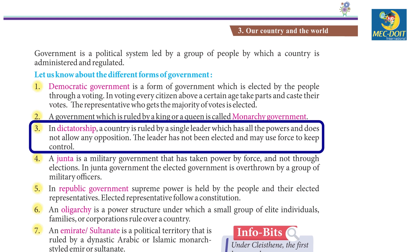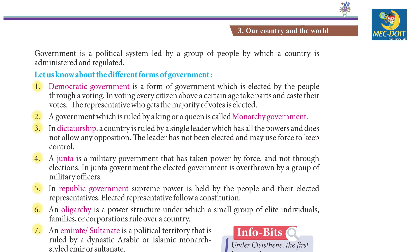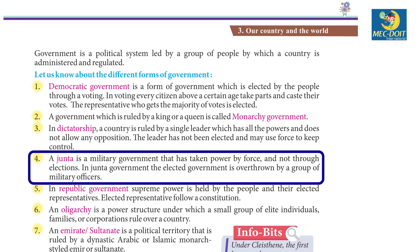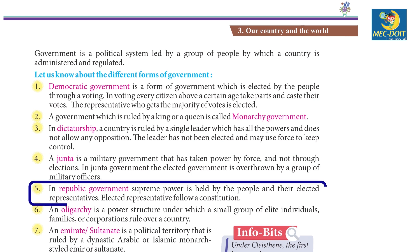The leader has not been elected and may use force to keep control. 4. A junta is a military government that has taken power by force and not through elections. In a junta government, the elected government is overthrown by a group of military officers. 5. In a republic government, supreme power is held by the people and their elected representatives follow a constitution.